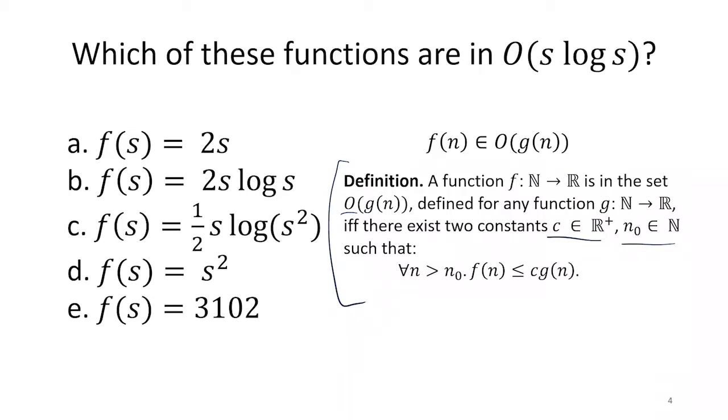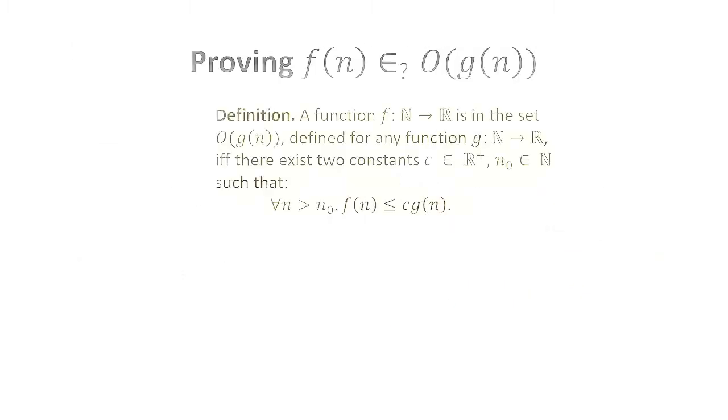Such that this property holds that F of n, which is the function that's in the set, is always less than or equal to that constant times g of n for all the numbers greater than n zero. We'll look at the examples, but first make sure we understand that definition.